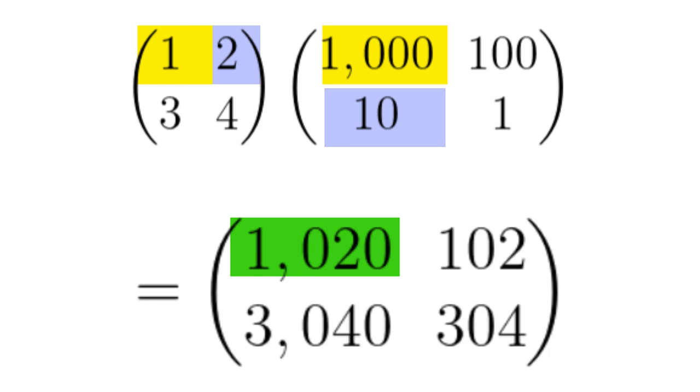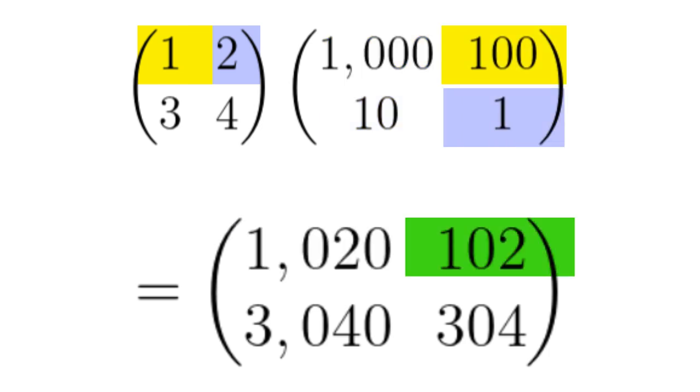Yellow times yellow plus blue times blue is green. One times a thousand plus two times ten is a thousand twenty. One times a hundred plus two times one is a hundred and two.